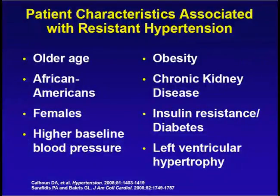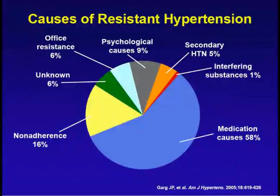At least in the US, they have identified patient characteristics such as old age, black race, female sex, higher baseline blood pressure, obesity, chronic kidney disease, insulin resistance, and left ventricular hypertrophy as common accompaniments, representing risk factors for resistant hypertension.